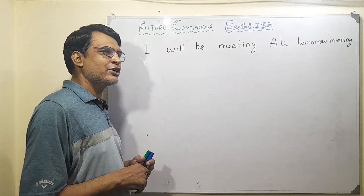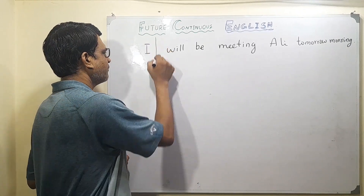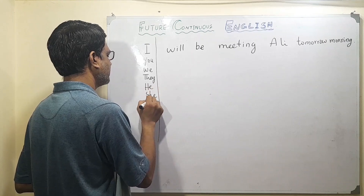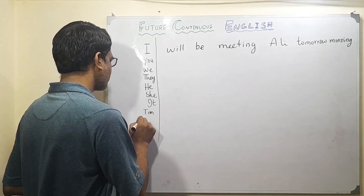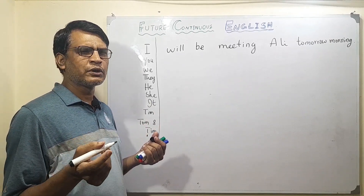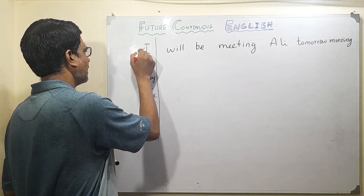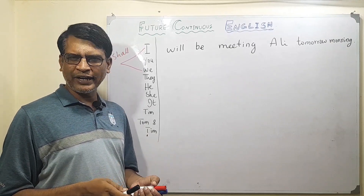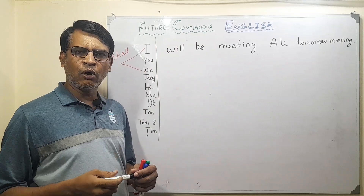With future tenses, the interesting thing is that we don't have to worry about the helping verb. Whether it is I, you, we, they, he, she, it, one individual, or two people — it will be the same. Some people think that 'shall' will be used with I and we, but that used to happen in the past. In modern English, we simply use 'will' with all of these subjects.